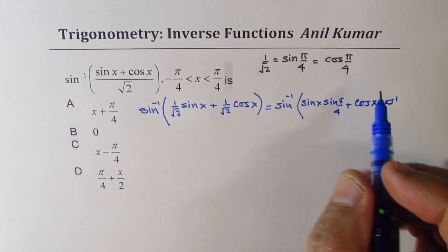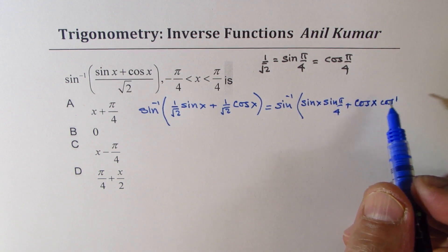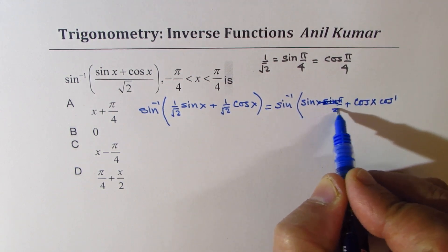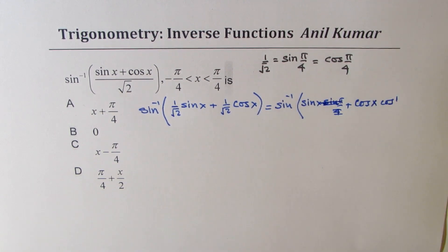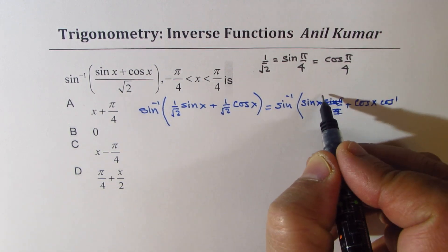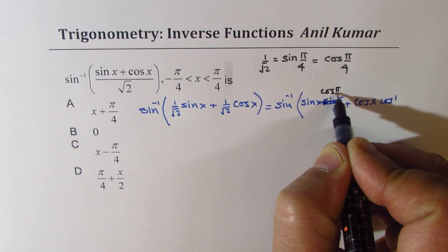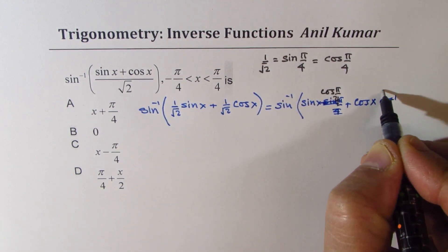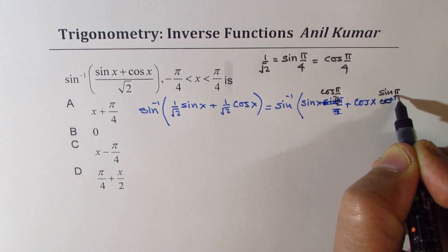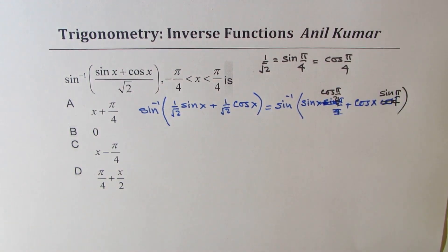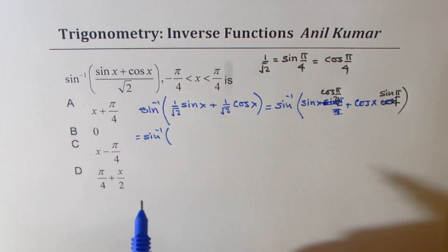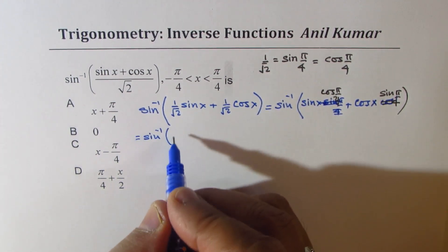Sorry, let me rewrite this correctly. I'll use cos(π/4) here: sin x · cos(π/4) + cos x · sin(π/4). We can then write this as sine inverse of sin(x + π/4).